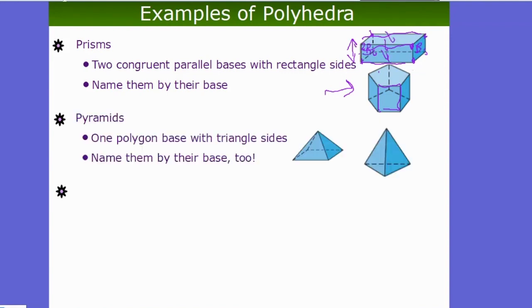A pyramid has a polygon for a base, but there's only one base — unlike prisms which have two. The faces all meet up at a point, going from that point to each vertex on the base. The lateral sides of a prism are rectangles, whereas the lateral sides of a pyramid are triangles.